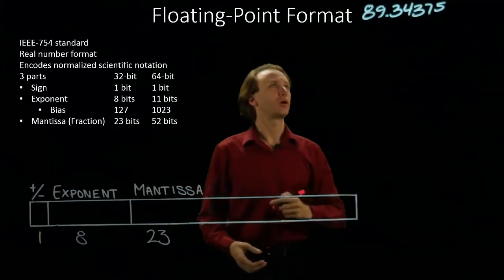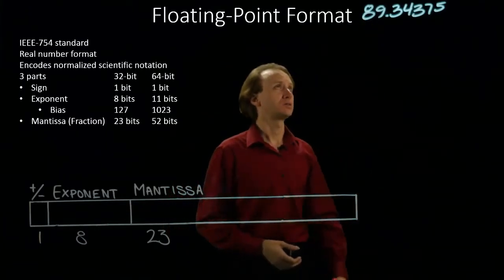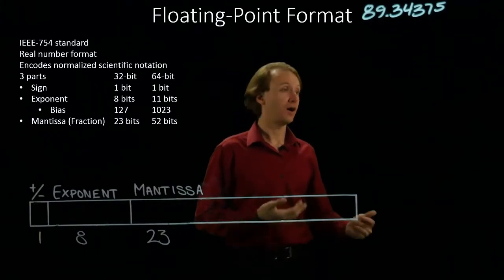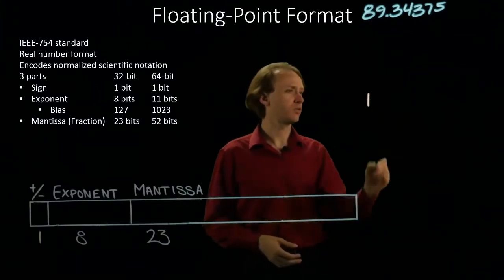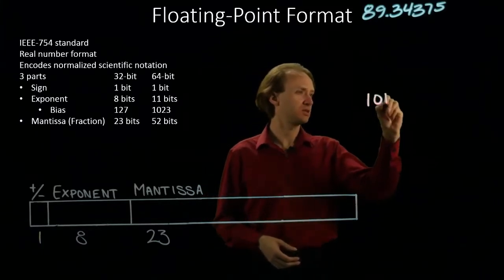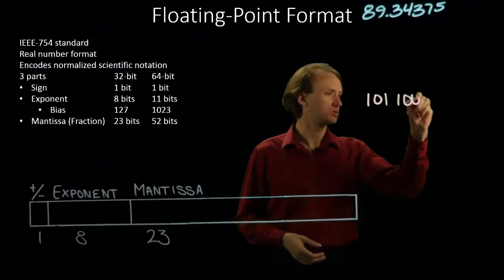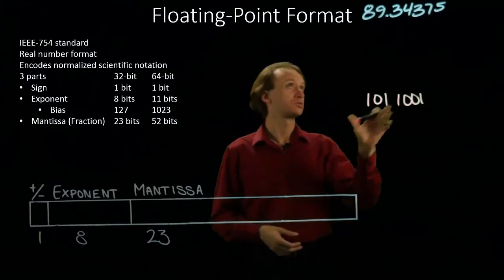I'm going to try to do this in two parts. I'll start with the whole number part. So, 89 is 64 plus 25. So, I've got a 64-bit. No 32-bit. I'll have a 16-bit. This leaves me with 9 more. So, 1, 0, 1. So, there's the 89.